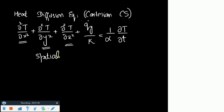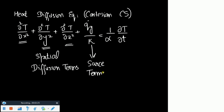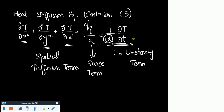These three spatial derivatives are second-order derivatives. If you remember from your fluid dynamics course, the diffusion term in Navier-Stokes — ∂²u/∂x² — is a diffusion term. So these second-order terms are called diffusion terms. The q̇_g term represents energy generation and is known as the source term, responsible for producing energy into the system. The right-hand side is the unsteady term.